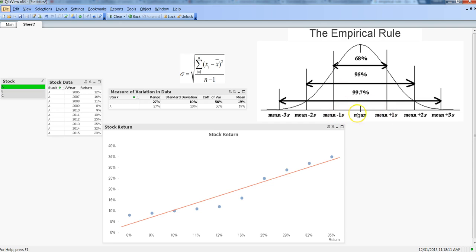...it goes to the right. Within this area, you have 68% of observations lying in this bell curve. That's what I explained in the previous video.